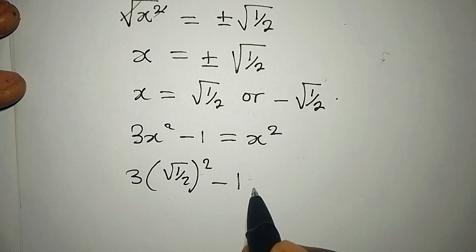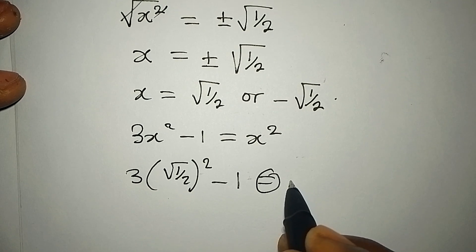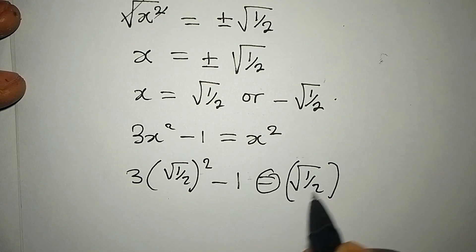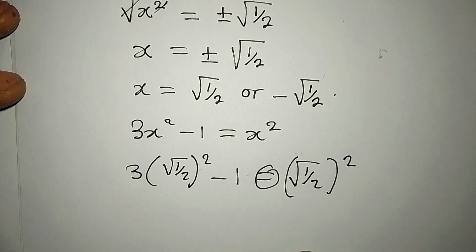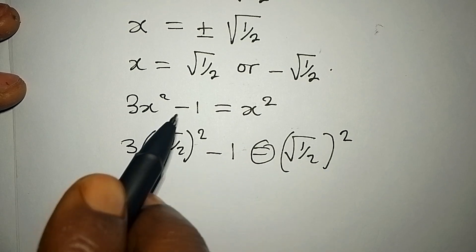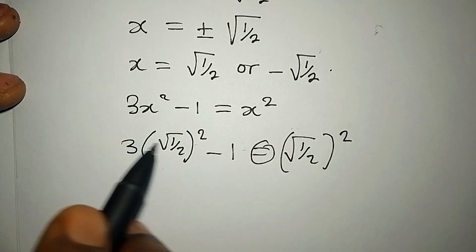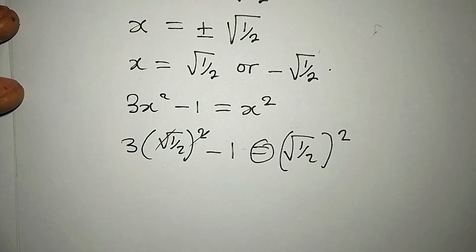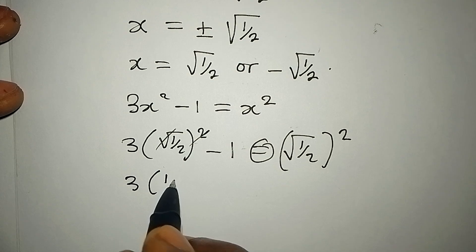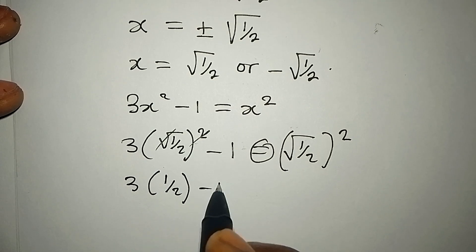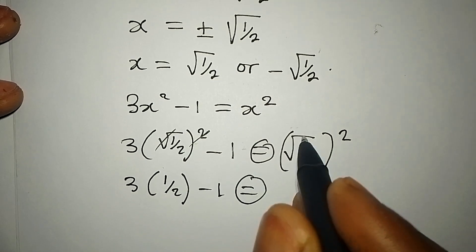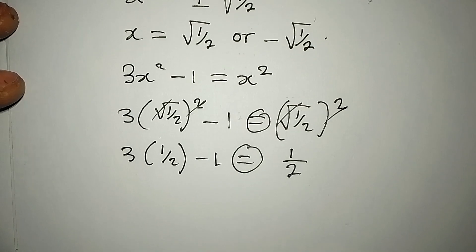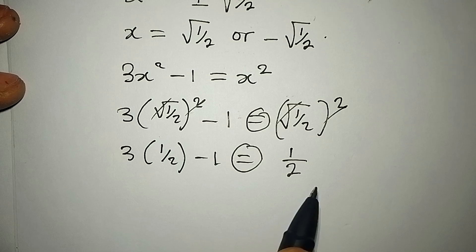Will this be equal to (√(1/2))²? This is what we're going to get. This and this can cancel, so we have 3 × (1/2) - 1. Then on the other side, this and this will cancel and we have 1/2. Do you think what we have on the left is equal to what we have on the right?